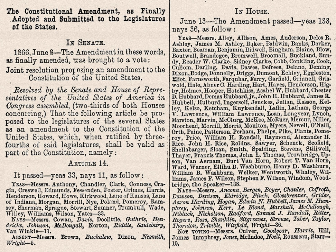The Citizenship Clause overruled the Supreme Court's Dred Scott decision that black people were not citizens and could not become citizens, nor enjoy the benefits of citizenship. Some members of Congress voted for the 14th Amendment in order to eliminate doubts about the constitutionality of the Civil Rights Act of 1866, or to ensure that no subsequent Congress could later repeal or alter the main provisions of that act. Some of the major issues that have arisen about this clause are the extent to which it included Native Americans, its coverage of non-citizens legally present in the United States when they have a child, whether the clause allows revocation of citizenship, and whether the clause applies to illegal immigrants.